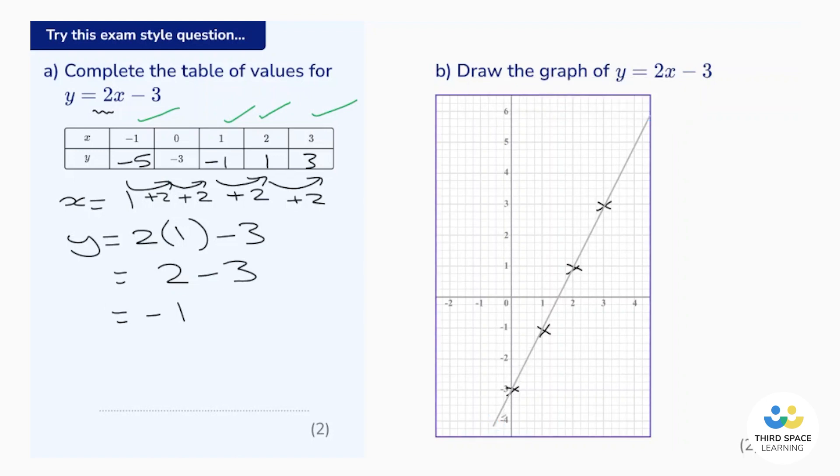It's a really good idea to extend the graph above and below your points. And that's worth two marks. We're going to get one mark for correctly drawing a nice straight line that passes through negative 3, and the second mark comes from a fully correct straight line.